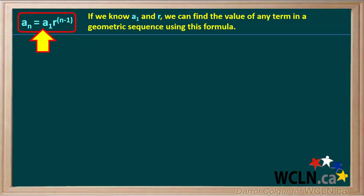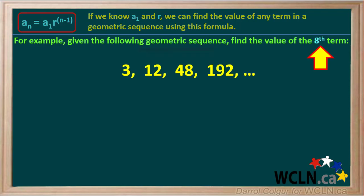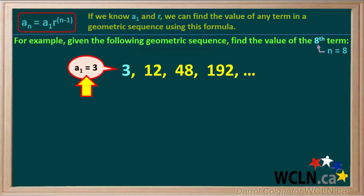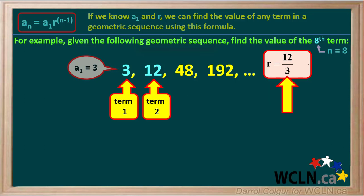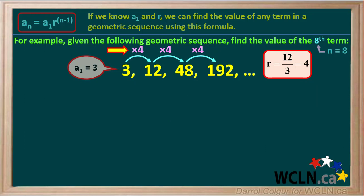Given this formula, if we know the first term, a1, and the common ratio, r, we can find the value of any term in a geometric sequence. For example, we are given this sequence and asked to find the value of the eighth term. n stands for the term number, so we can state that n equals 8. The first term of this sequence, a1, is equal to 3. To find the common ratio, r, we can take the ratio of term 2 over term 1, or 12 over 3, which is equal to 4. So r equals 4. We can double check this — to get from one term to the next, we always multiply by 4.